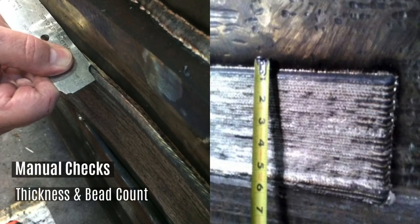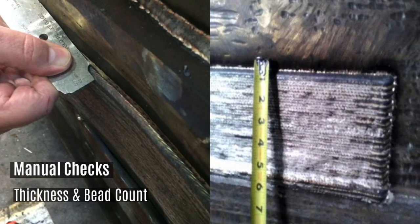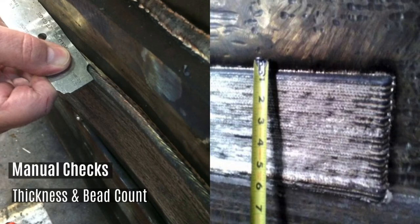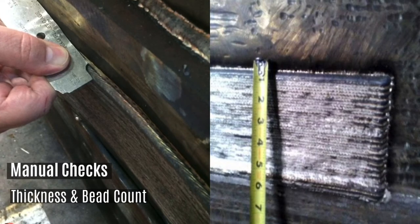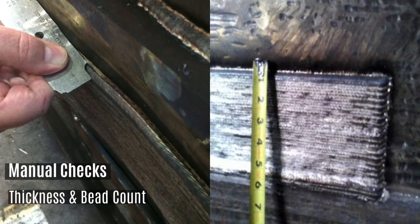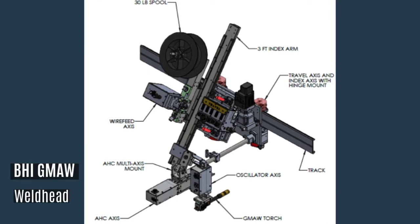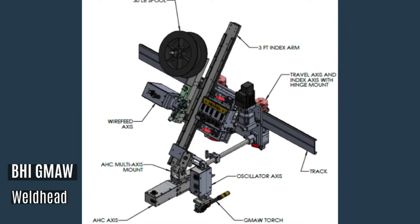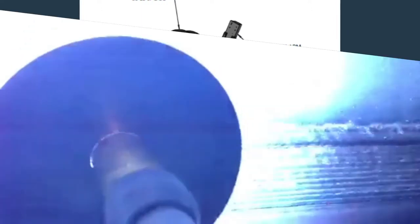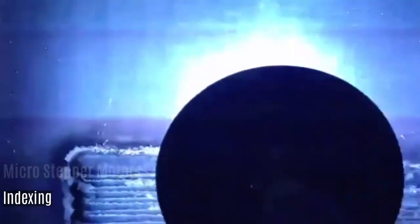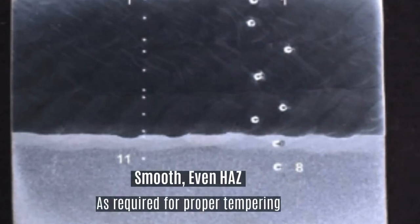In addition to weld parameters is the importance of indexing, or the number of beads counted in a vertical inch of overlay. Not enough beads and the chemistry is incorrect. Too many beads and the overlay is not bonded to the vessel wall. Automated equipment of the past, and some still in use today, rely on servo motors or motors that operate on timers to index the torch. Each of these motors are susceptible to heat and changes in load torque. At BHI, we use a microstepper motor to index our torch. This motor is unaffected by the issues that plague other systems. Indexing cannot be overemphasized enough — not only is it a key factor in bonding the overlay to the vessel wall, but it is the foundation for a smooth surface profile.